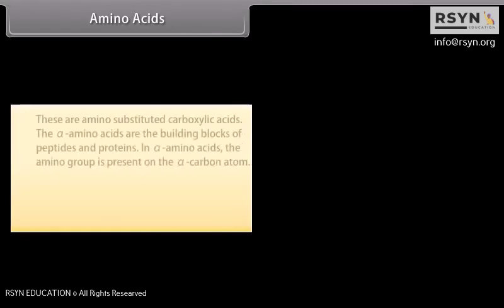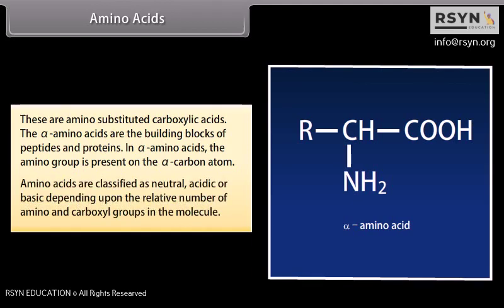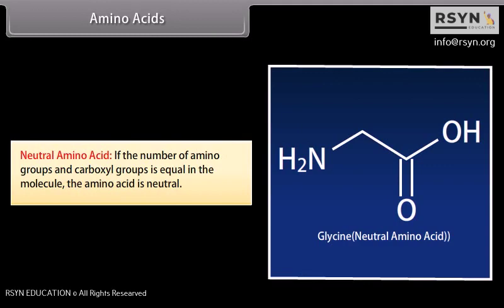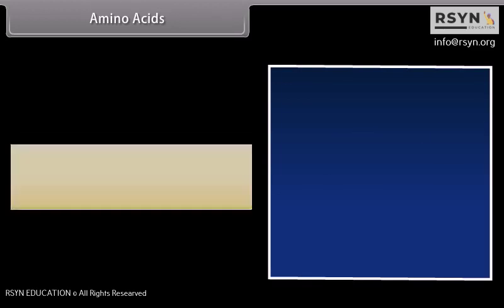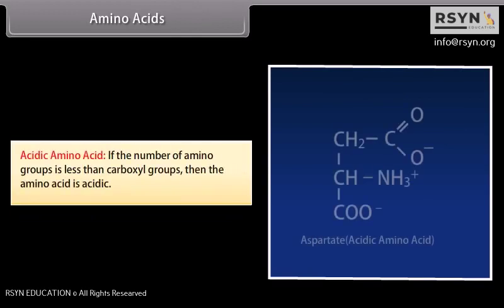Amino acids are amino-substituted carboxylic acids. The alpha amino acids are the building blocks of peptides and proteins. In alpha amino acids, the amino group is present on the alpha carbon atom. Amino acids are classified as neutral, acidic, or basic depending upon the relative number of amino and carboxyl groups in the molecule. Neutral amino acids have equal numbers of amino and carboxyl groups, for example glycine. Basic amino acids have more amino groups than carboxyl groups, for example lysine. Acidic amino acids have fewer amino groups than carboxyl groups, for example aspartate.